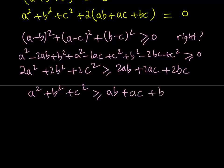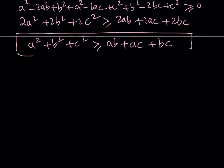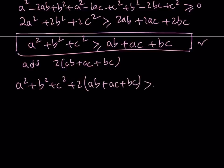This is the inequality we are going to use. If you have three real numbers, the sum of their squares is greater than or equal to the sum of their pairwise products. Now let's go ahead and take our expression — a squared plus b squared plus c squared is greater than or equal to ab plus ac plus bc — and add two times ab plus ac plus bc to both sides to see what happens.